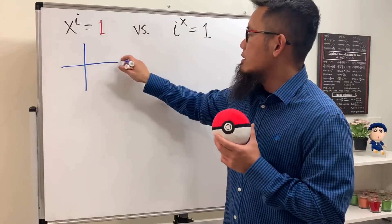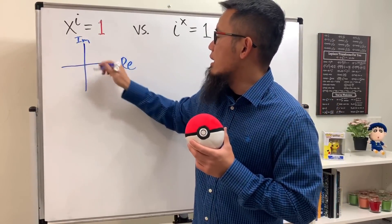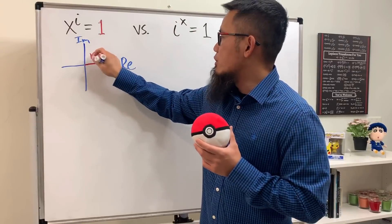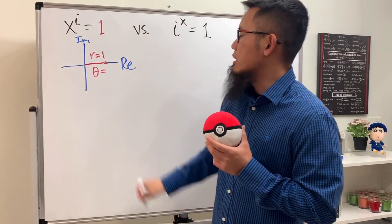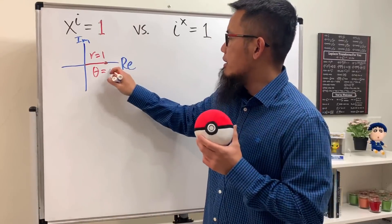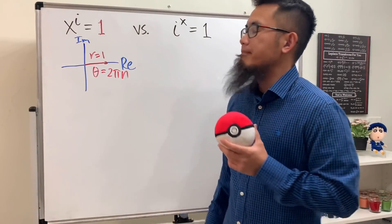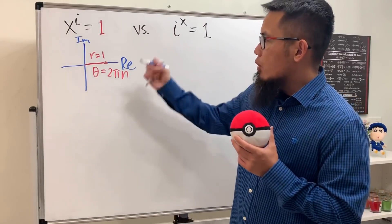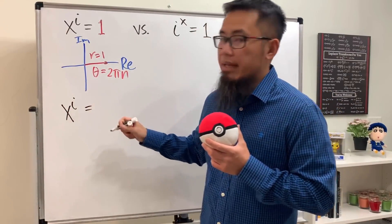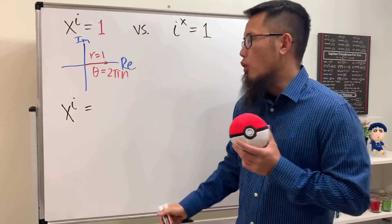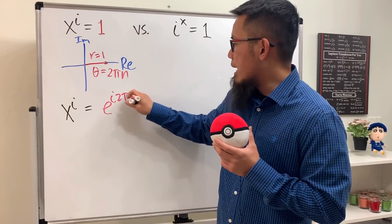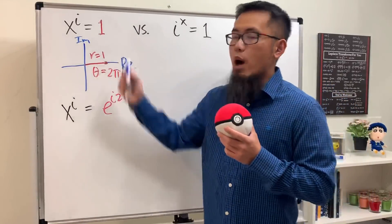Here is the real axis and the imaginary axis. 1 is right here and we have to write 1 into polar form. We need r, which is just equal to 1, and also theta, which is going to be 0. But we can keep adding or subtracting 2π, so theta is technically 2πn — a multiple of 2π.